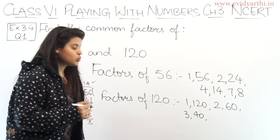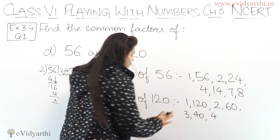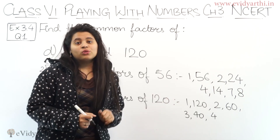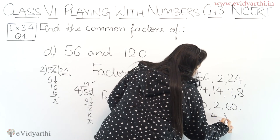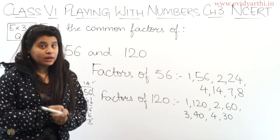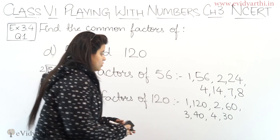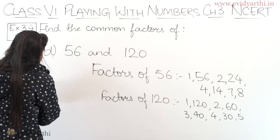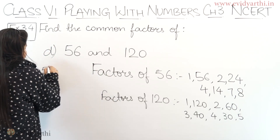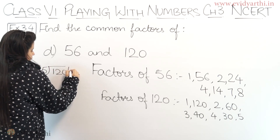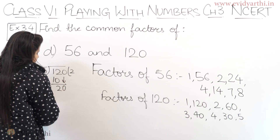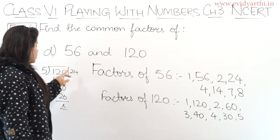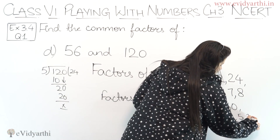Checking 4: 4 into 30 is 120, so both 4 and 30 are factors. Checking 5: since the last digit is 0, it's divisible by 5. Dividing 120 by 5 gives 24, so 5 and 24 are factors. Then checking 6: 6 into 20 is 120, so both 6 and 20 are factors.